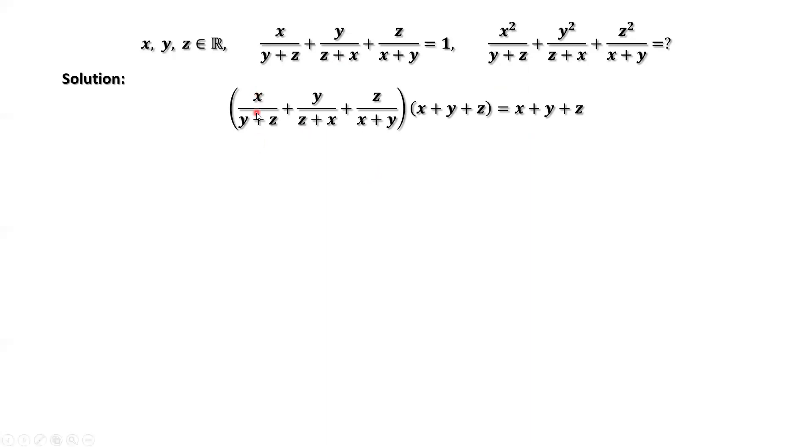The first term, times x plus y plus z, we do this way. x times x is x squared. The remaining part is x times y plus z, y plus z. Why are we doing this?